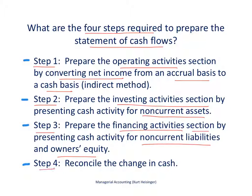Step four is to reconcile the change in cash for the period. For example, if our cash balance at the beginning of the year was $100,000 and it went down to $80,000 by the end of the year, then steps one through three — those three sections — would show why the cash went down from $100,000 to $80,000, explaining why it decreased by $20,000. That is what we would show in step four.